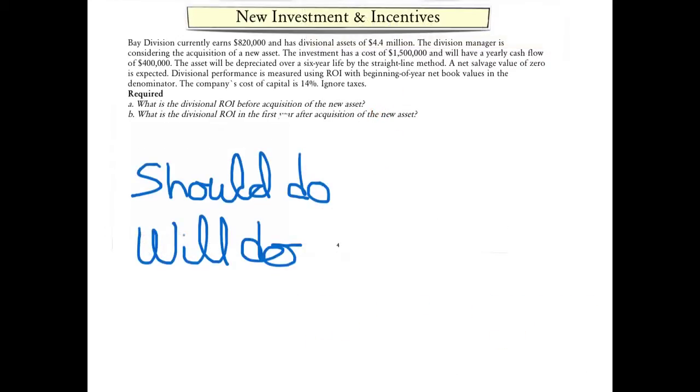In this example, we want to consider whether a division manager will undertake a potentially profitable investment. The main concern here is not with the calculation of whether or not the investment is profitable, but rather, does the manager have an incentive to undertake a profitable investment? This is not a question so much of what the manager should do, but rather a question of what the manager will do.